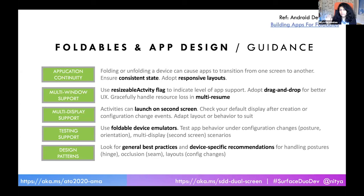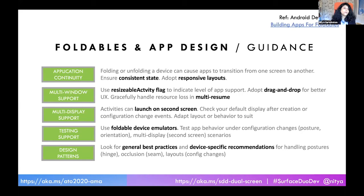If you look at the Android space, the ecosystem gives you design guidance for foldables. First, always think about responsive layouts that automatically adapt as you go from fold to unfold, showing the right set of fragments and optimizing for the layouts you have. Make sure you're always keeping consistent state — so if the user was in the middle of typing data into a form, when it goes from fold to unfold, you don't lose any of it. Second, think about multi-window support. There's a resizable activity flag — use that to determine whether you want to handle those events or let the Android OS restart you. Use drag and drop because it's intuitive and very efficient in this ecosystem.